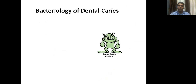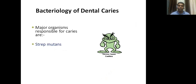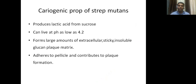Bacteriology of dental caries: the major organisms responsible for caries of the tooth are Streptococcus mutans, Lactobacilli, and other strains of Streptococci. It produces lactic acid from sucrose, can live at pH as low as 4.2, and forms a large amount of extracellular, sticky, insoluble glucan plaque matrix.